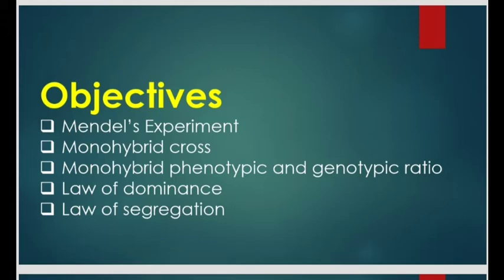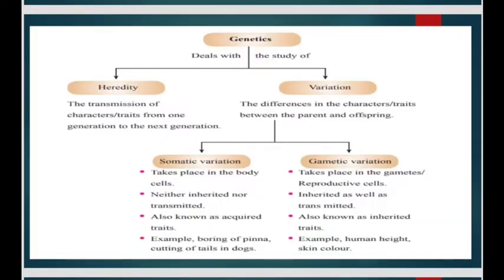As we studied from Module 1, genetics deals with the study of heredity and variation. Heredity is the transmission of characters or traits from one generation to the next generation. Variation is the differences in the characters or traits between the parents and offspring. It is of two types: somatic variation and gametic variation.